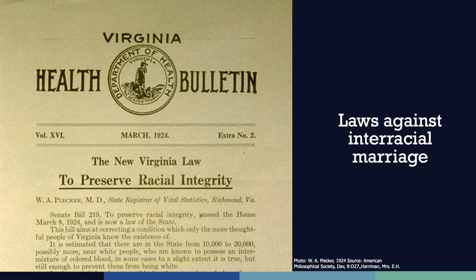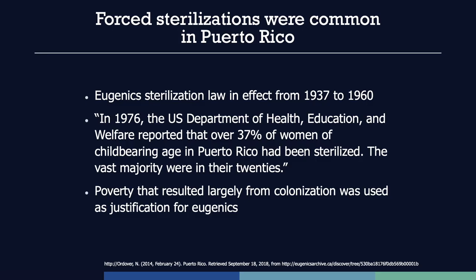Many states had laws forbidding interracial marriage from the late 17th century until 1967, when the Supreme Court ruled in Loving v. Virginia that such laws were unconstitutional. Eugenic ideas lent a new set of justifications for such laws by providing a pseudoscientific explanation for the perils of race mixing.